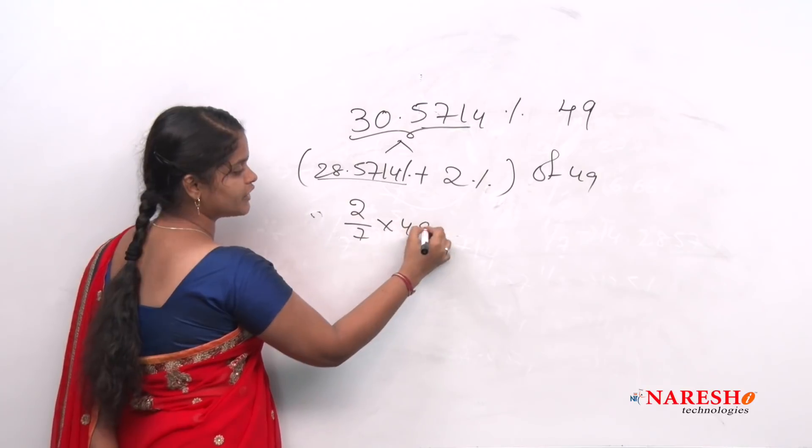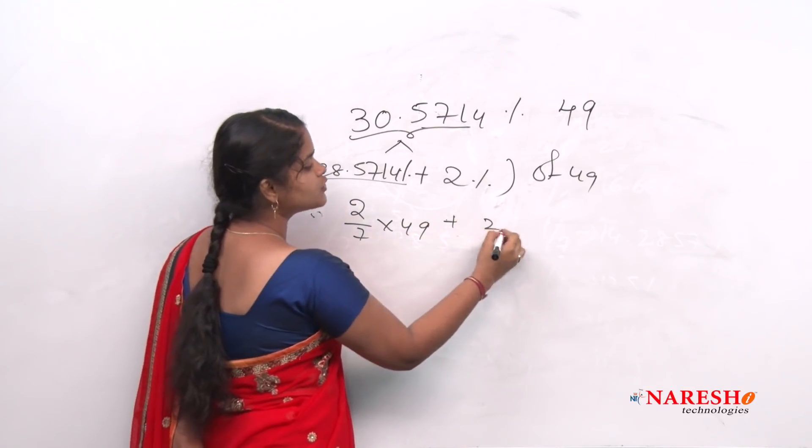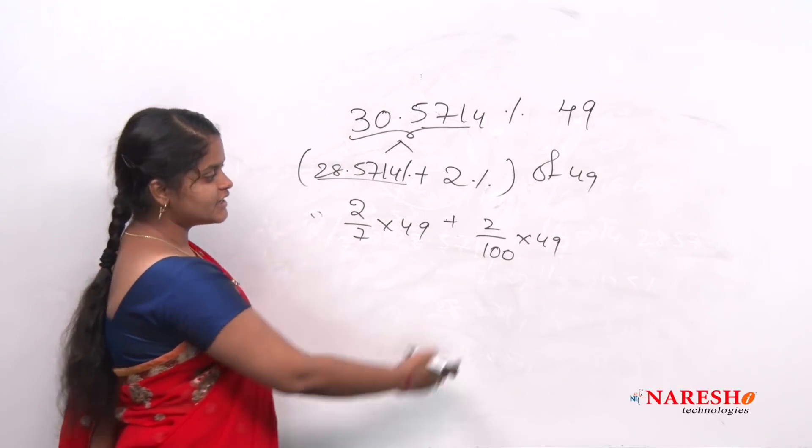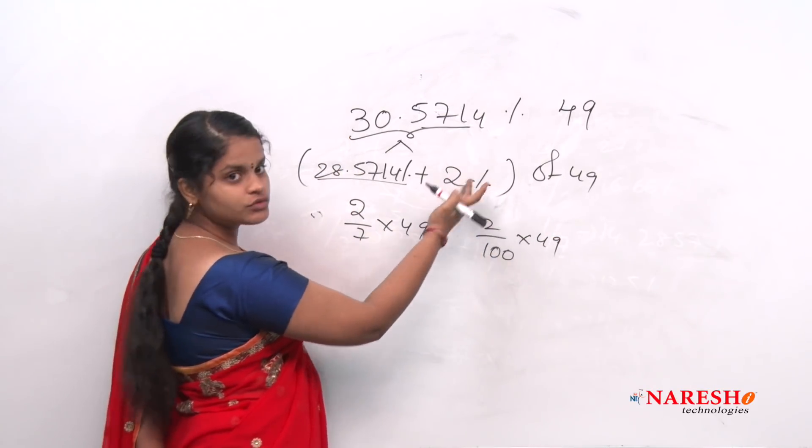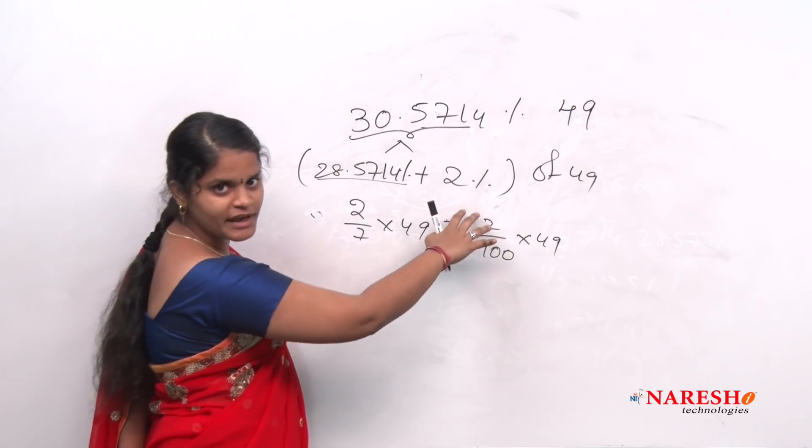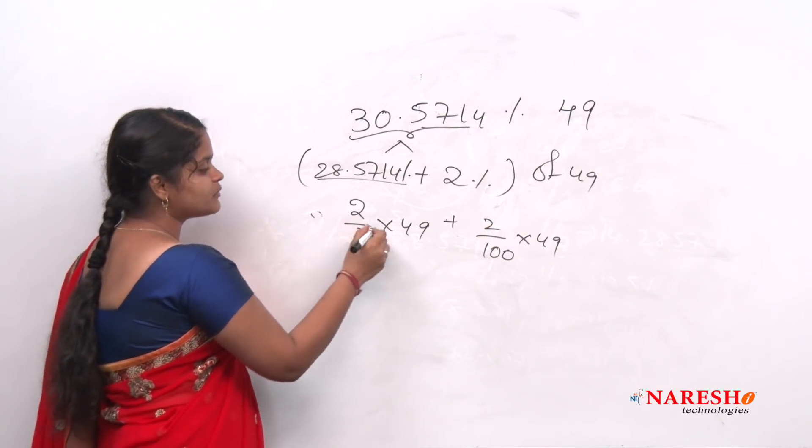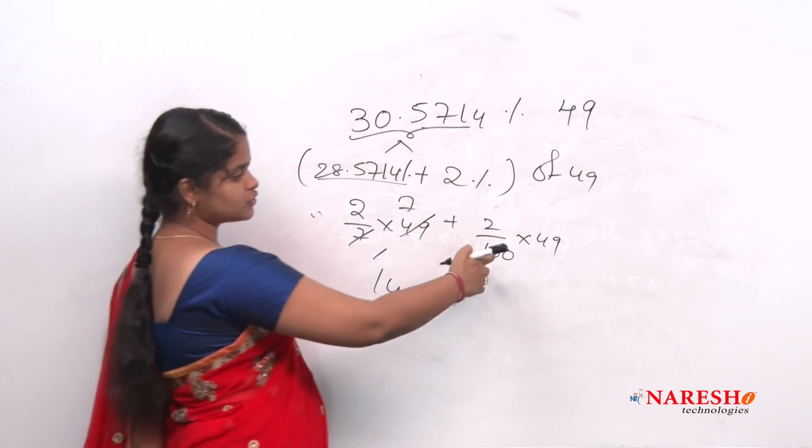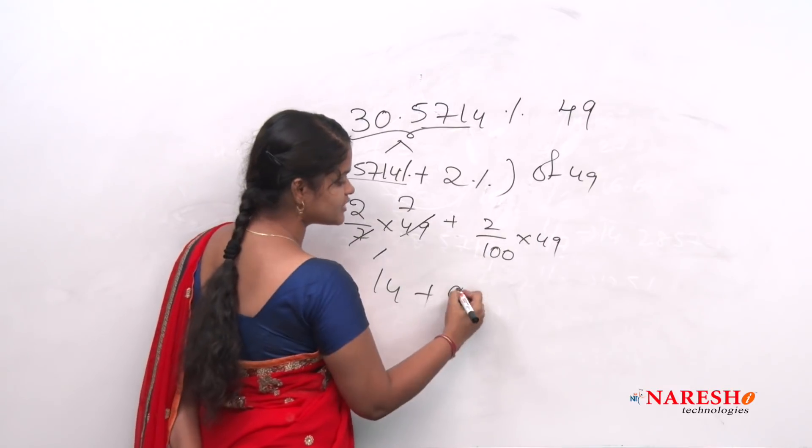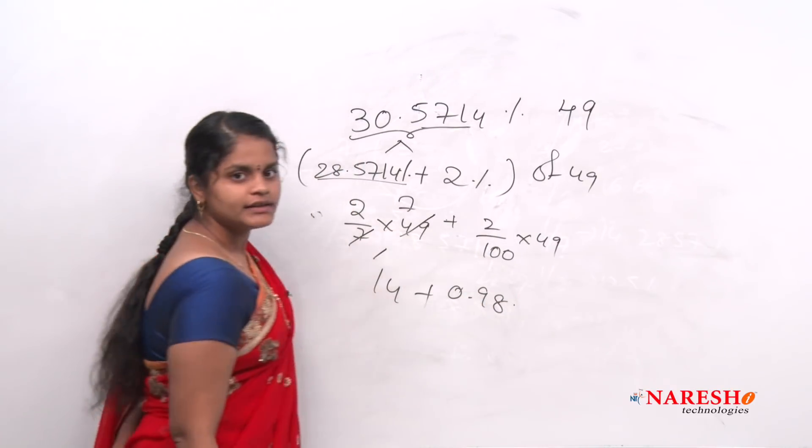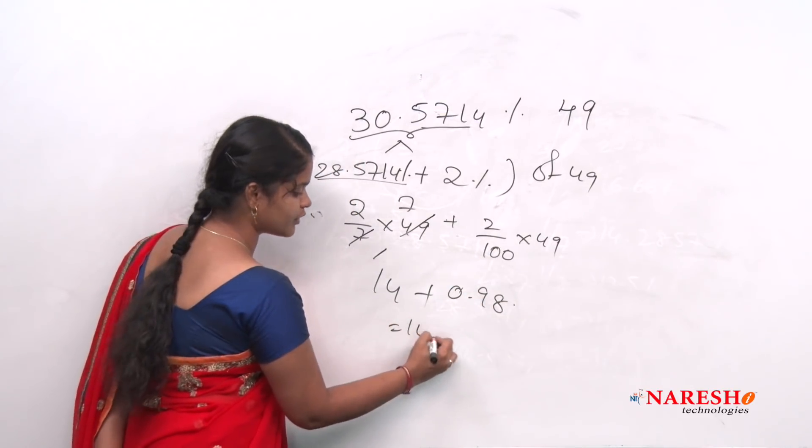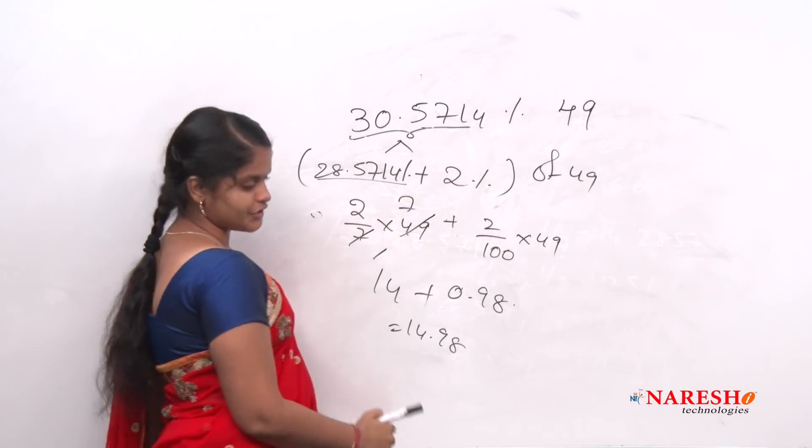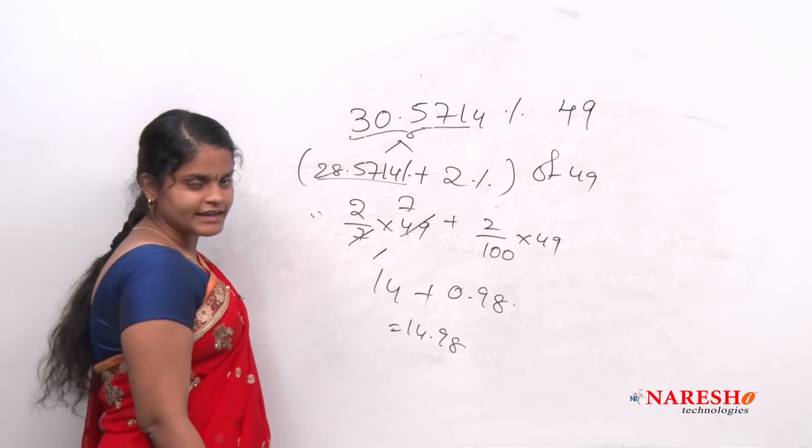So now instead of this what we can write? 2/7 into 49 plus 2/100 into 49, right? In part 1 we had seen how to calculate 2 percent, 1 percent everything in a easy manner. So now this will be how much? 14 plus 2/7, 14 plus this value is 0.98. So total equal 14.98. So 30.5714 percentage of 49 is 14.98.